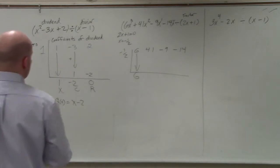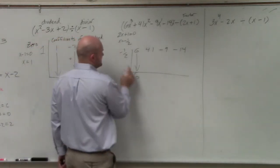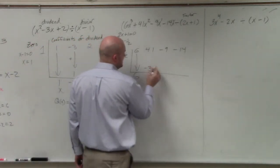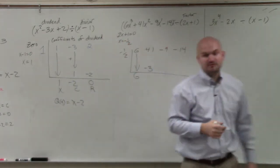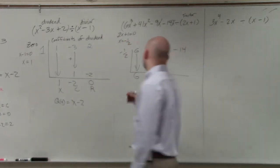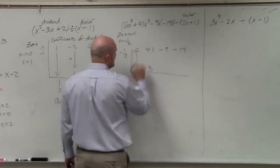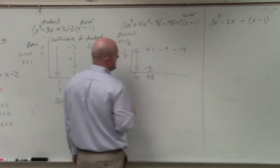Then, now we multiply on the diagonal. So it's 6 times negative 1 half is negative 3. And then we add vertically. 41 plus negative 3 is going to be a positive 38.